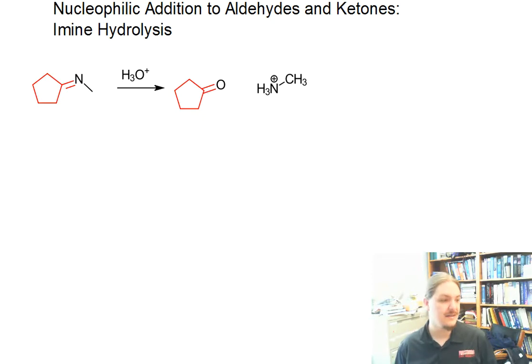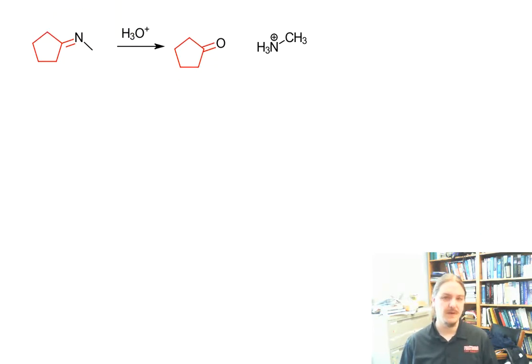And this is a net substitution reaction, but it's done by an addition-elimination pathway. And just like the hydrolysis of an acetal, this mechanism is completely the reverse. It goes through the same intermediates as the formation of the imine, just we have nucleophiles and leaving groups in the opposite order. So first we have nucleophilic addition. The last step of imine formation is an E1 elimination. This nucleophilic addition is the reverse of that process.